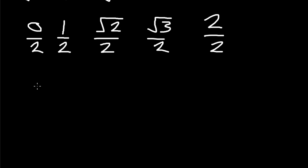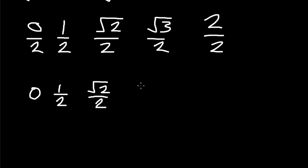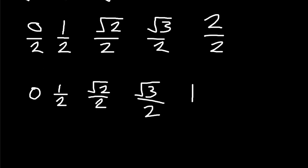Zero divided by two gives zero. One divided by two gives one-half. Root two divided by two stays as root two over two — it's irrational. Root three divided by two stays as root three over two. And two divided by two gives one. These are the most important numbers we wanted to get.